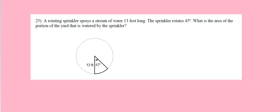All right, guys, I have no idea how I turn this pink, but we'll keep working anyway. So a rotating sprinkler sprays a stream of water 13 feet long, rotates 45 degrees — find the portion of the yard that's covered.